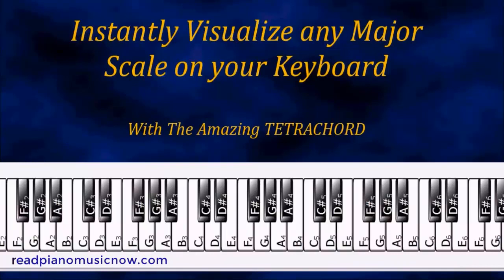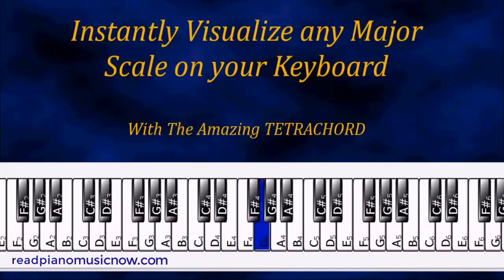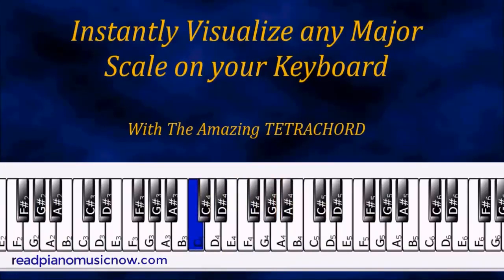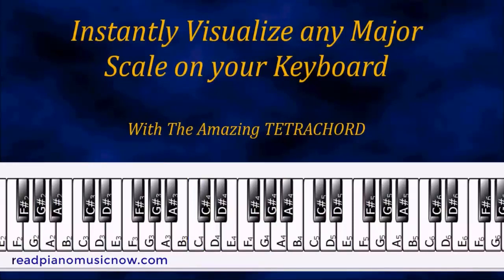We're going to start with C major as our example. It's easy to see C major because it's all the white keys on the piano starting from C up to C.